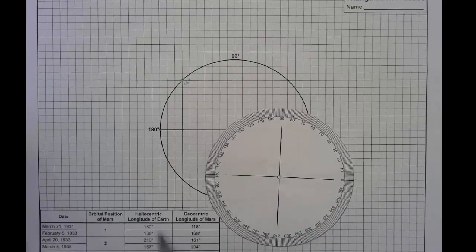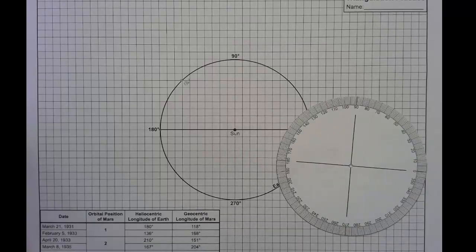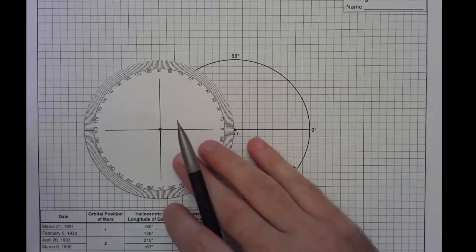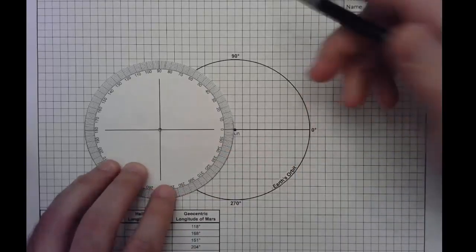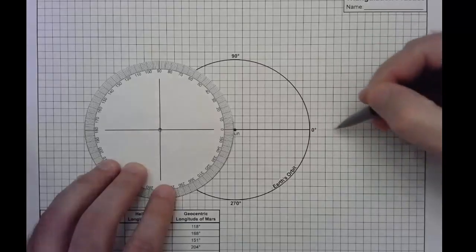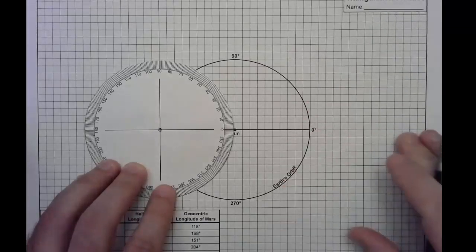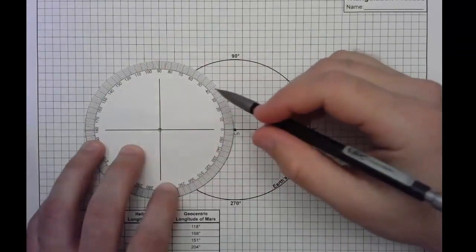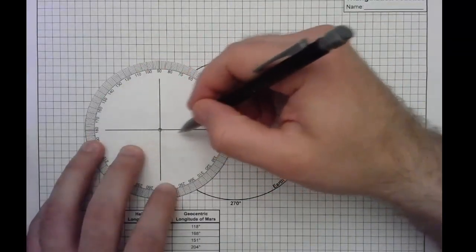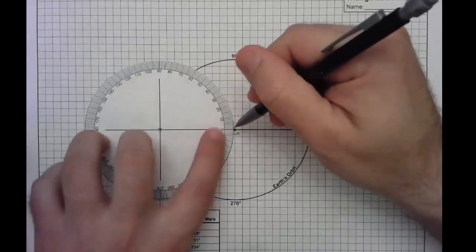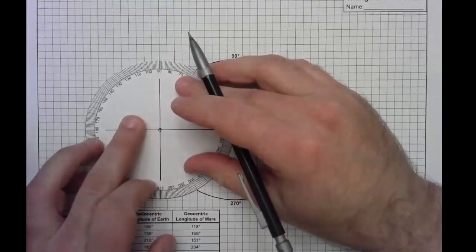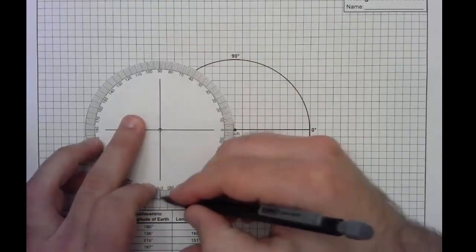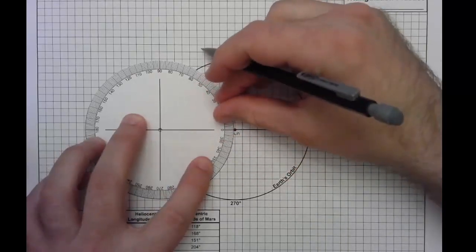So the next piece is getting the geocentric longitude of Mars. That means we need to now shift our protractor, and we're going to place it or center it on our Earth's orbital position. And again, you need to make sure zero is always pointing towards the zero on the page. So in this case, it's towards the right. And you're just going to make sure that the lines are registered. This point falls right on this grid line. Zero is lined up. 180 is lined up. 90 and 270. Just a little bit of adjustment there. So that's vertical, vertical. And now we should be good to go.